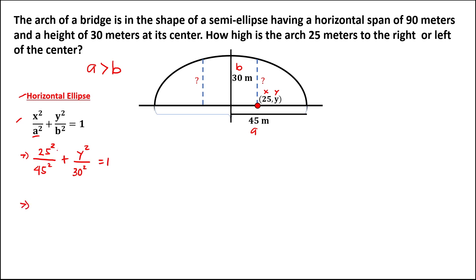Then, to simplify, this 25 squared is 625 over this 45 squared, this is 2025, then plus y squared over 30 squared, this is 900, then equals 1.